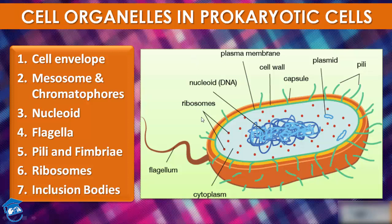These red dots are ribosomes. Prokaryotes have something unique called inclusion bodies — these are found freely in the cytoplasm.